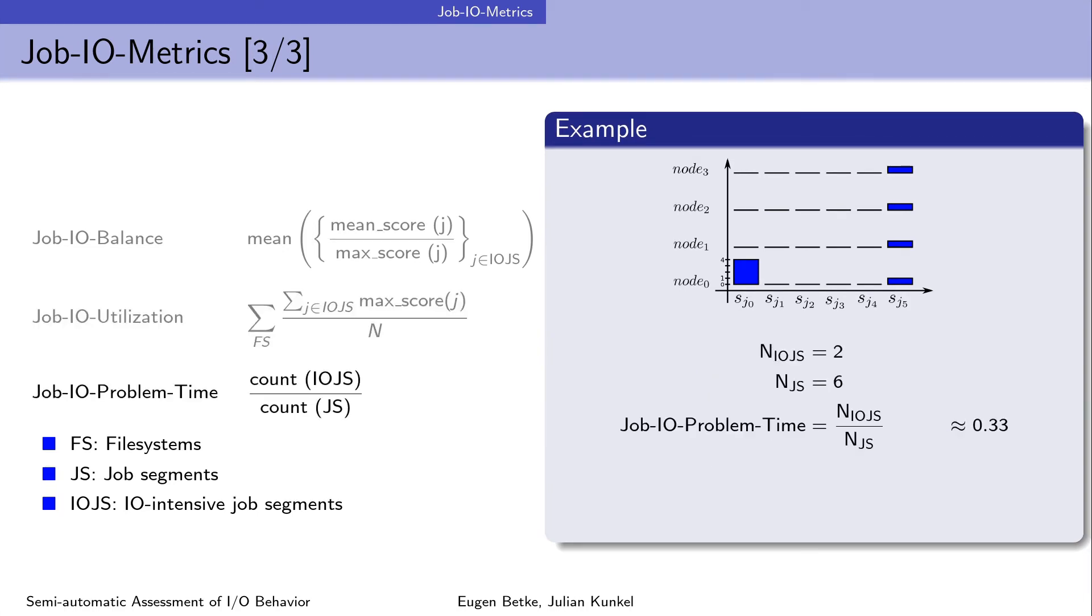The job I/O problem time metric is the fraction of job runtime that is I/O intensive. It is approximated by the fraction of segments that are considered problematic, that means the J score larger than 1. In other words, the I/O problem time is the amount of I/O intensive job segments divided by the total number of job segments. In the example we have two I/O intensive segments, the first and the last one, and we have 6 segments in total. The job I/O problem time is therefore 0.33.